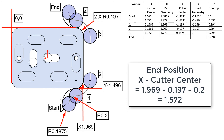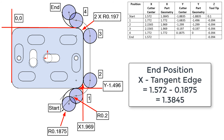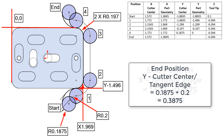At the ending position, the X for the cutter center will be 1.969 minus the part radius, minus the 0.2 arc radius, which equals 1.572. The X for the tangent edge of the cutter will be 1.572 minus the cutter radius, which equals 1.3845. The Y for the cutter center and the tangent edge will both be the cutter radius plus the 0.2 arc radius, which equals 0.3875.